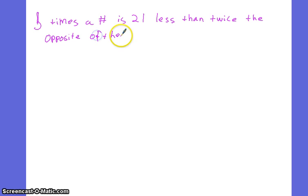Let's do one more. 5 times a number is 21 less than twice the opposite of the number. What is the number? That's 5 times a number, so that's 5n. It is 21 less than the opposite of the number.